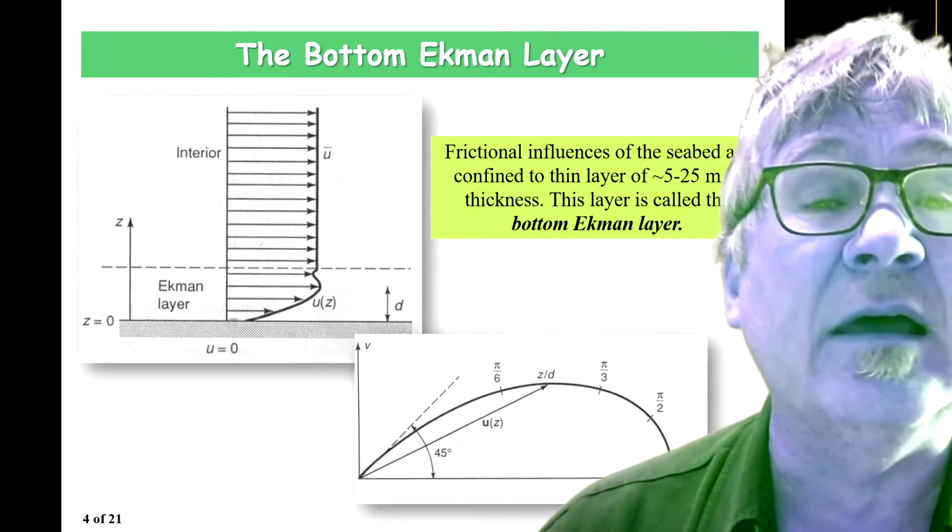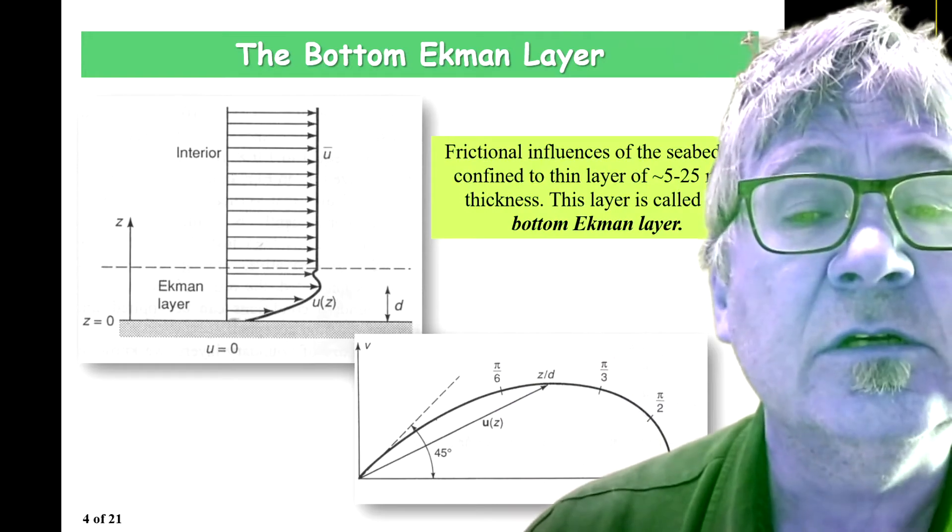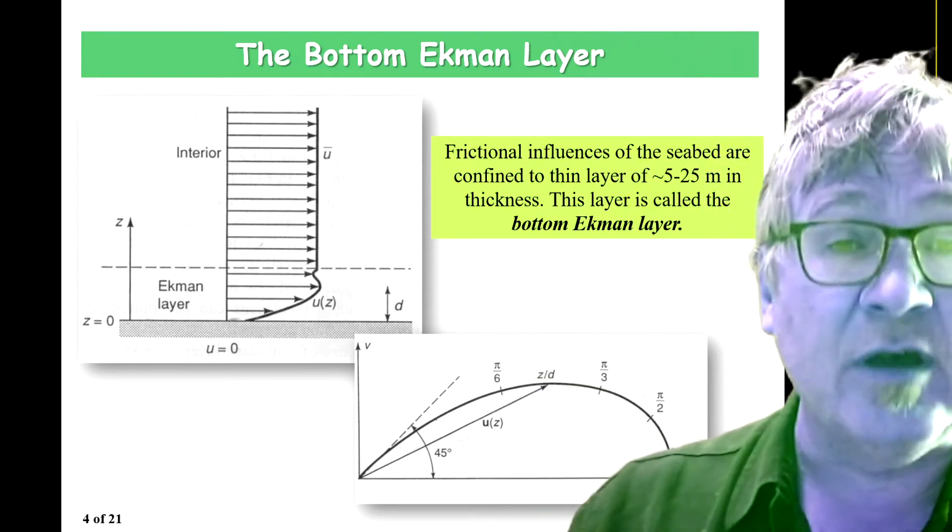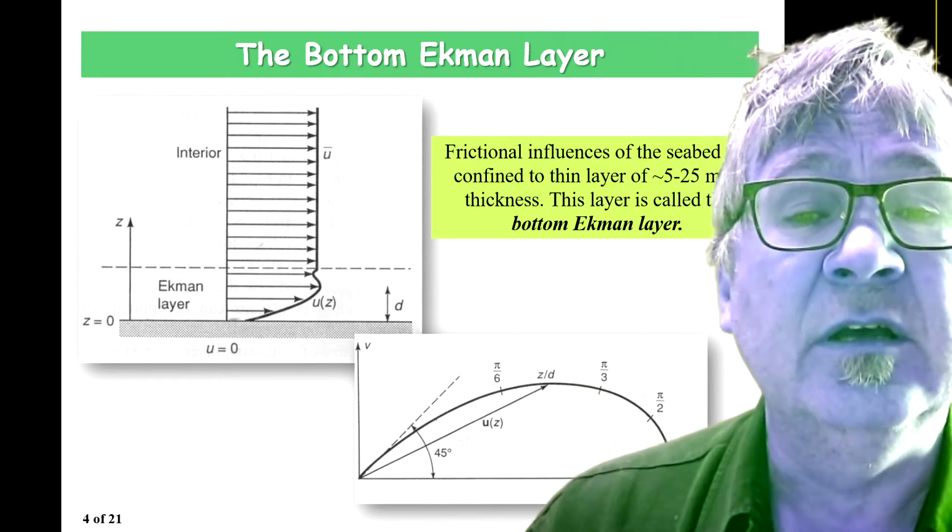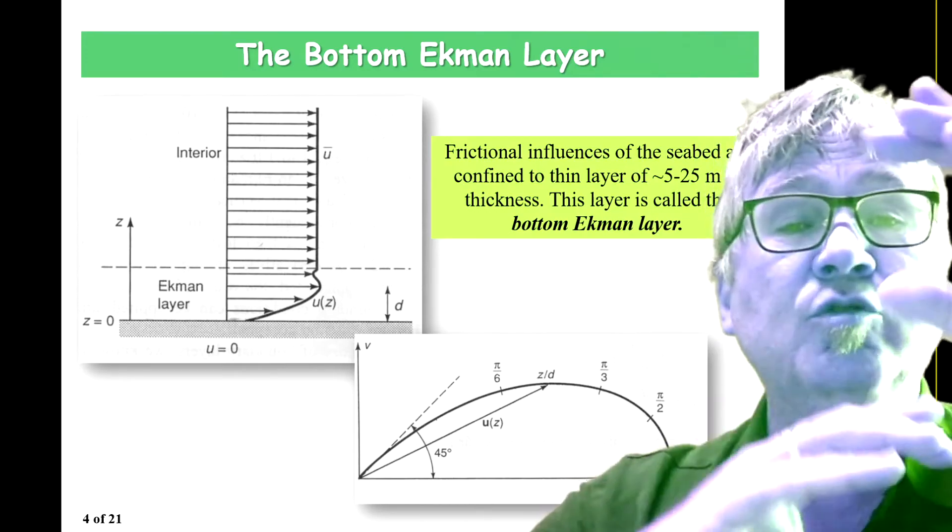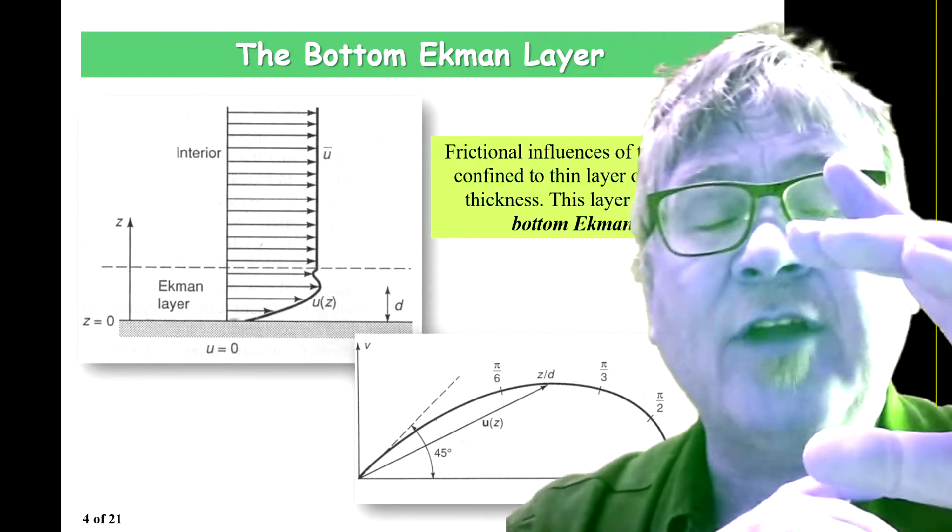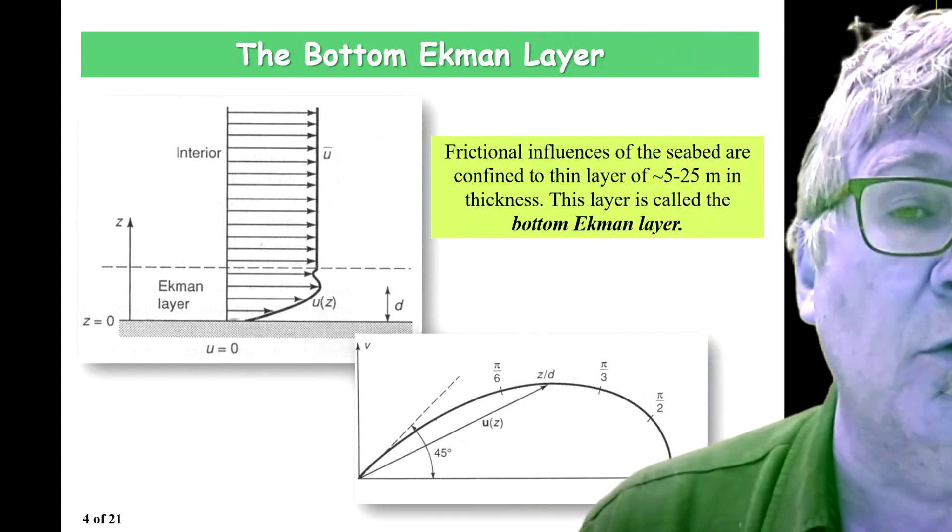The thicknesses really matter because in most coastal oceans, and also because you have density stratification, the surface and bottom Ekman layers actually do not interfere. They do not interact unless you are in very shallow water.